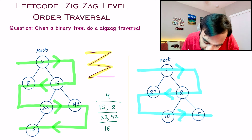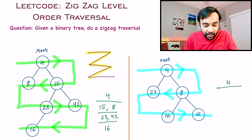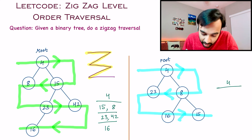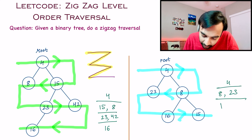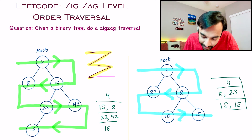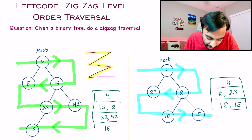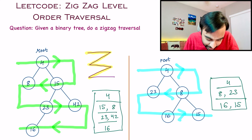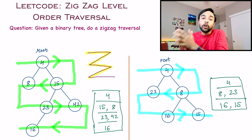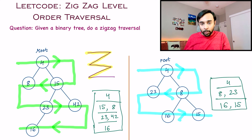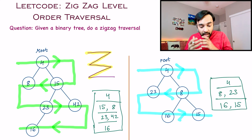For the first level you just have 4. For the second level you have 8 and 23 in that order. And then for the last level you have 16, 15. These two results are complete lists in themselves, and that is how you have to output the answer for this particular problem.